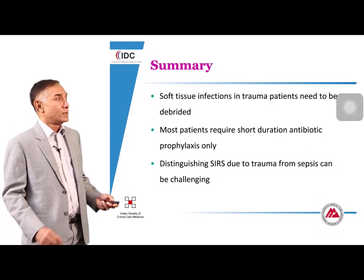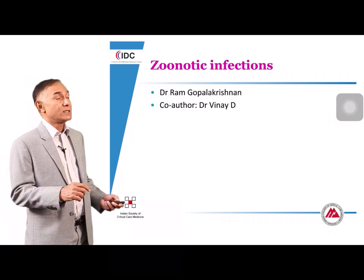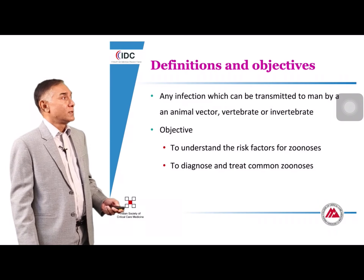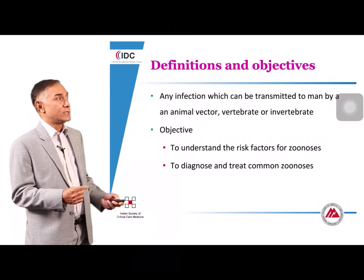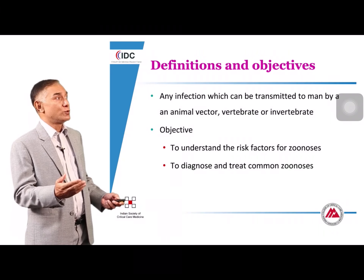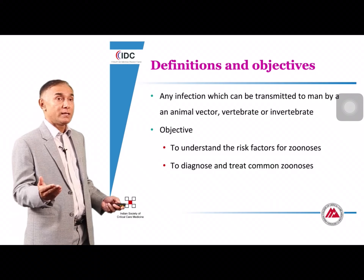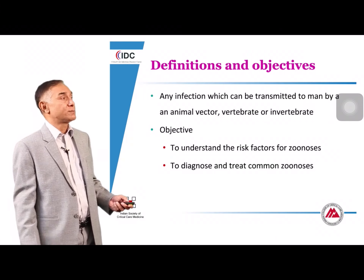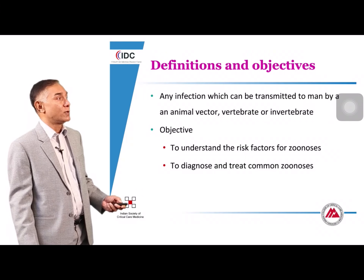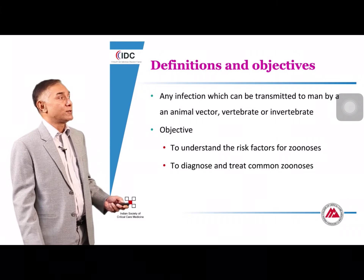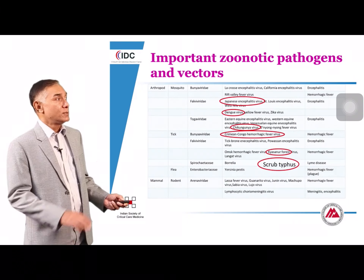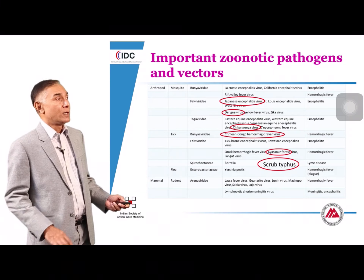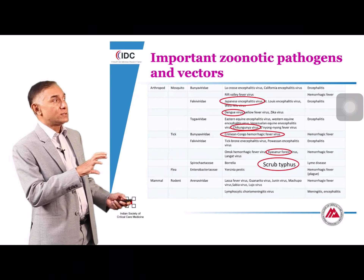The last part of this section covers zoonotic infections. Many zoonoses are covered elsewhere, so the focus here is on risk factors, diagnosis, and treatment. There are many zoonoses found worldwide, but the ones commonly seen in India include Japanese encephalitis, dengue virus, scrub typhus, Kyasanur Forest disease in selected parts of the country, Crimean-Congo hemorrhagic fever, leptospira, rabies, Chandipura virus, and avian influenza.